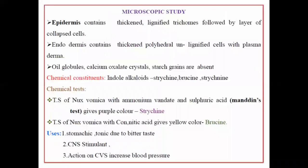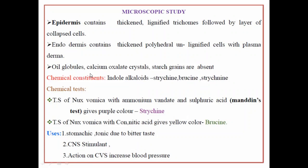Let's discuss the microscopy. The epidermis consists of thickened, lignified trichomes followed by a layer of collapsed cells — like a hair-like structure, as we have seen in previous classes. The endodermis contains thickened, polyhedral, unlignified cells with plasmodesmata. Oil globules and calcium oxalate crystals can also be observed. For the powder microscopy of Nux vomica seeds, starch grains are absent — that you have to remember.